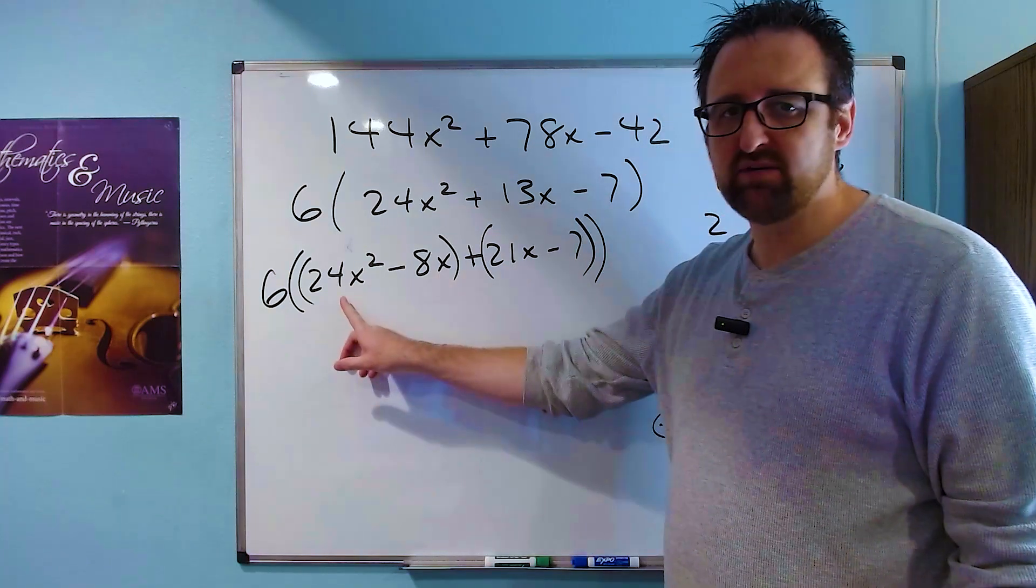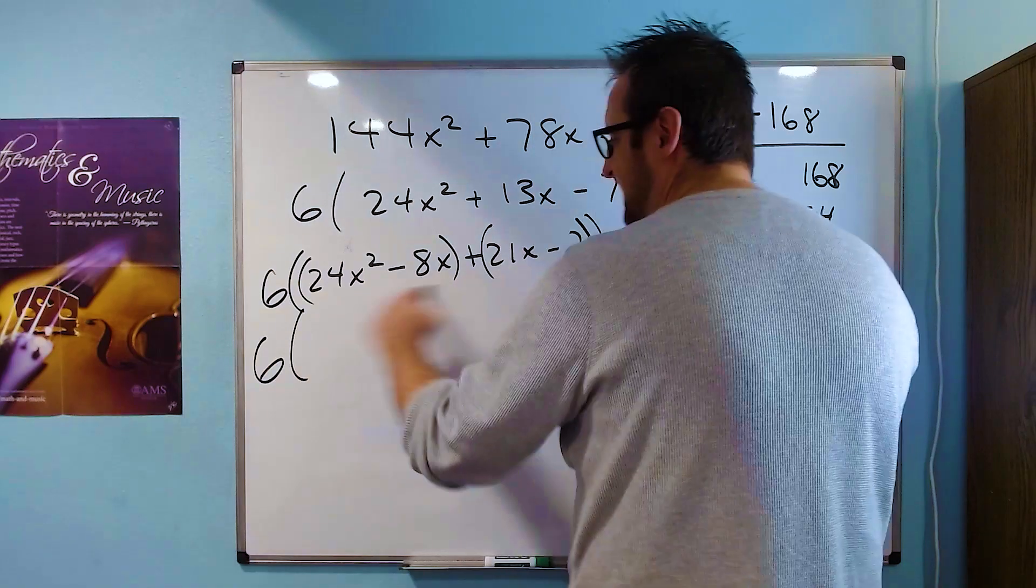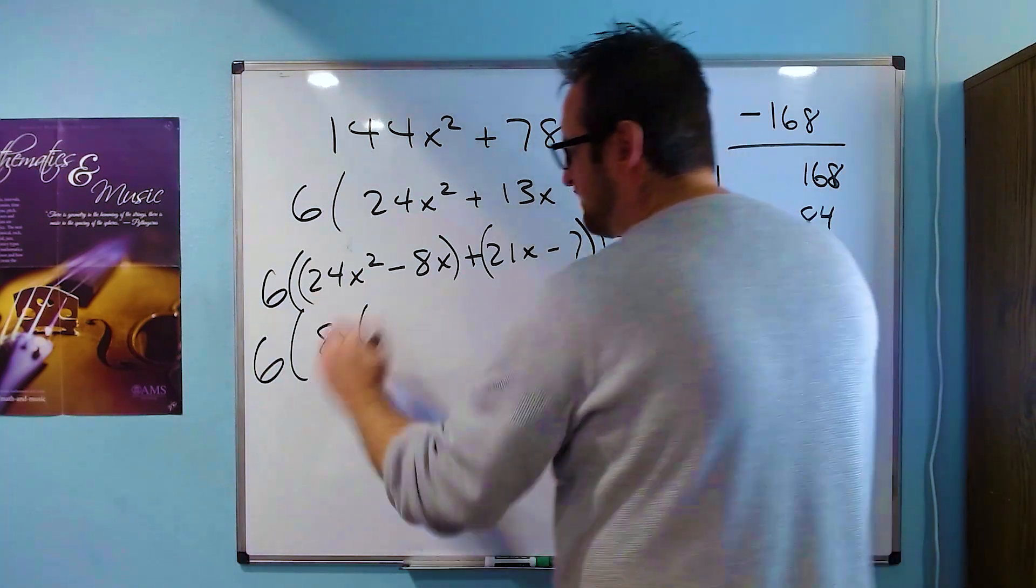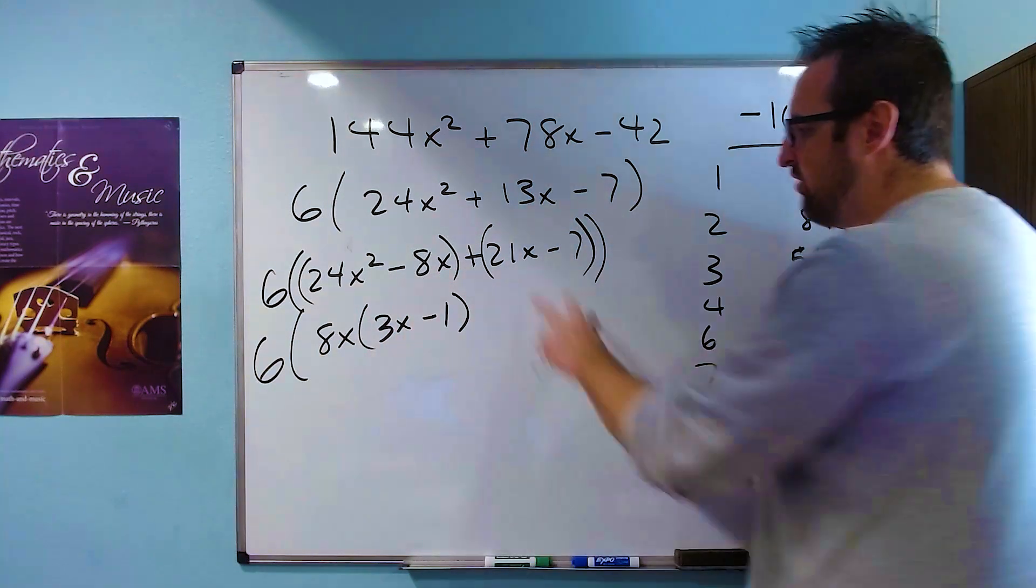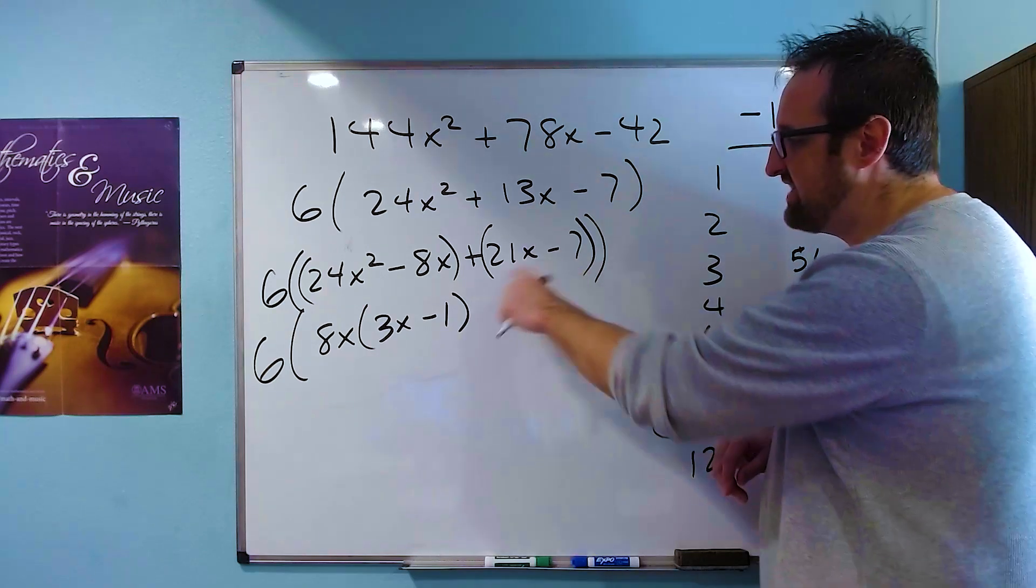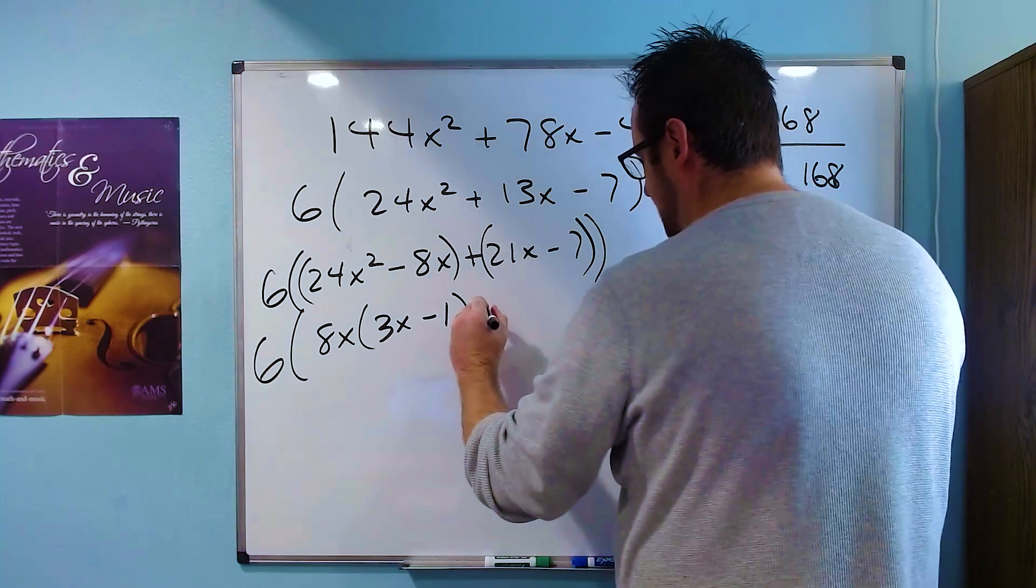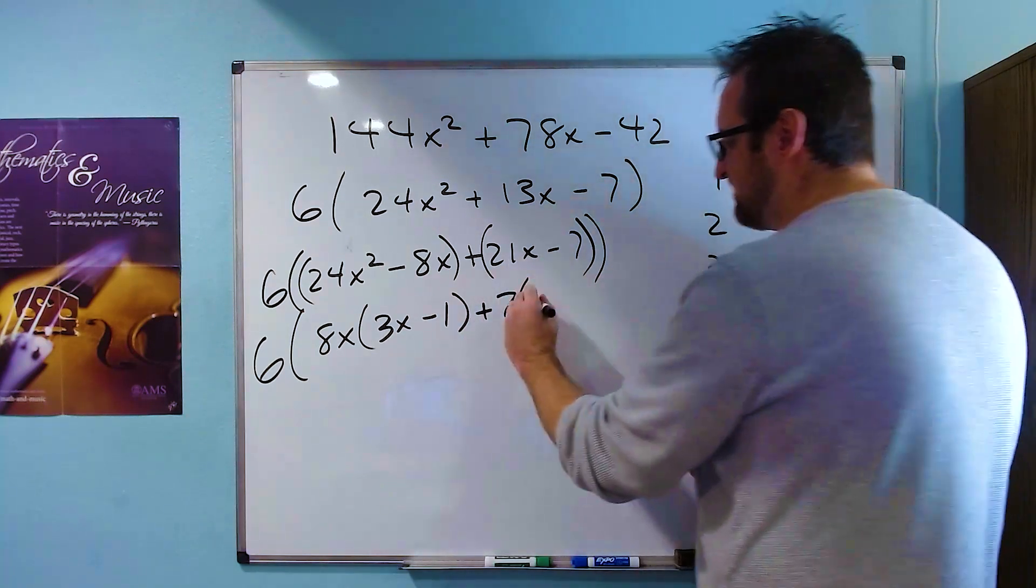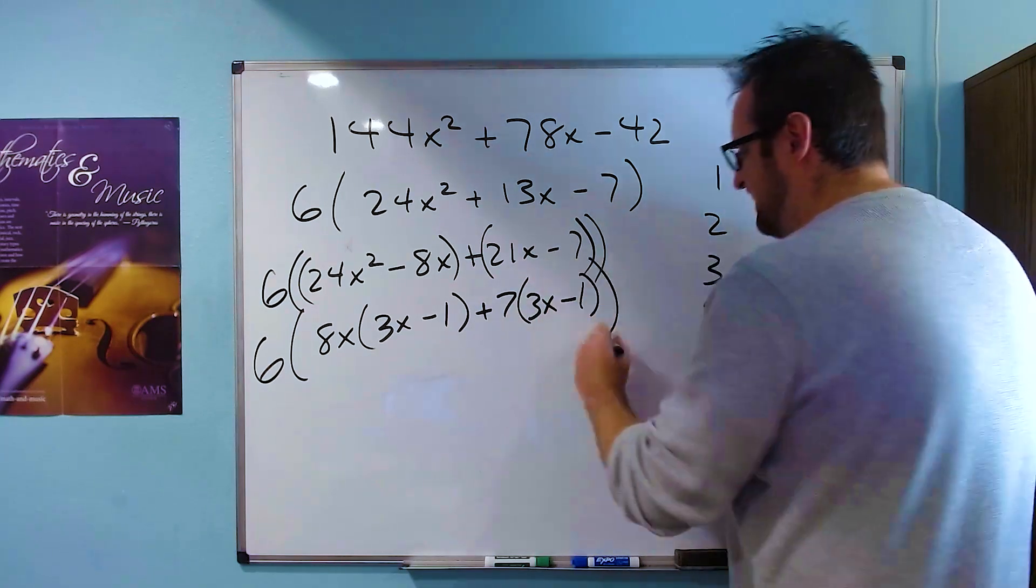And then over here, we look at what they have in common. We see it has an x and an 8. We'll keep our 6 out here, but we get an 8x out of this. And when we do that, 24x² divided by 8x is 3x. Negative 8x divided by 8x is minus 1. Over here, we notice that they have a 7 in common. And the first term is already positive, so we don't have to change anything. So we'll pull out a 7. And what's left over, 21x divided by 7 is 3x. Negative 7 divided by 7 is negative 1.